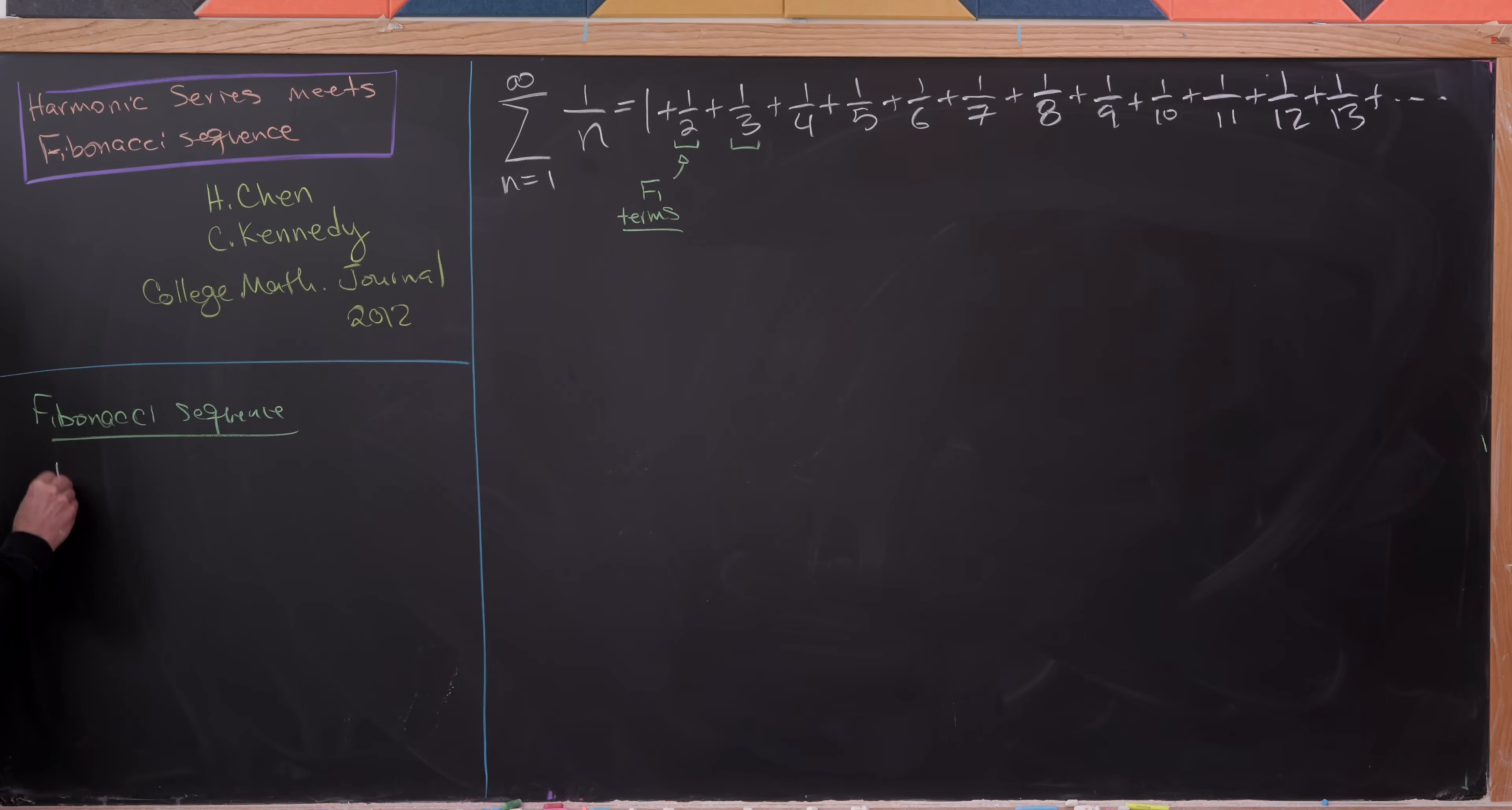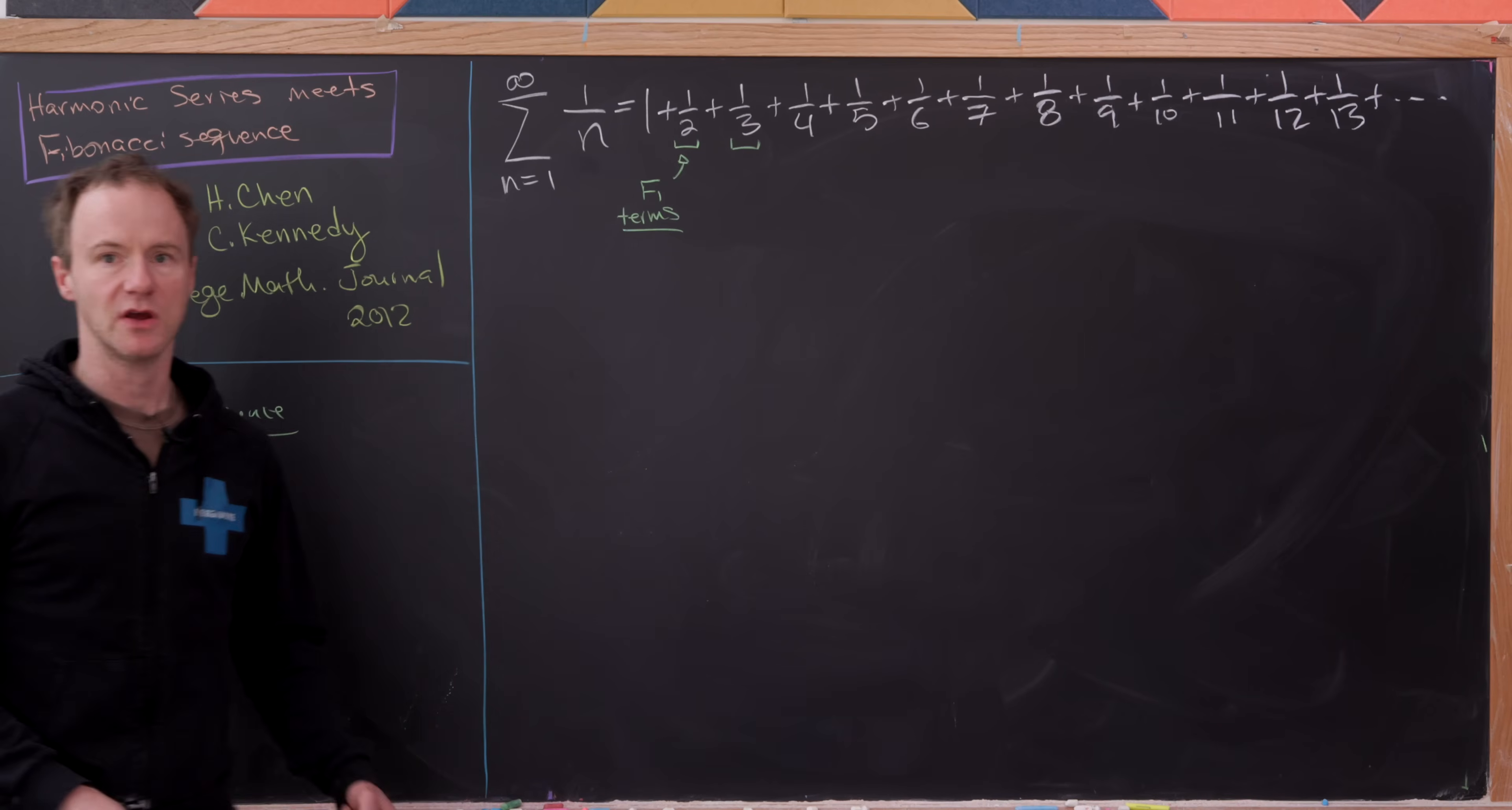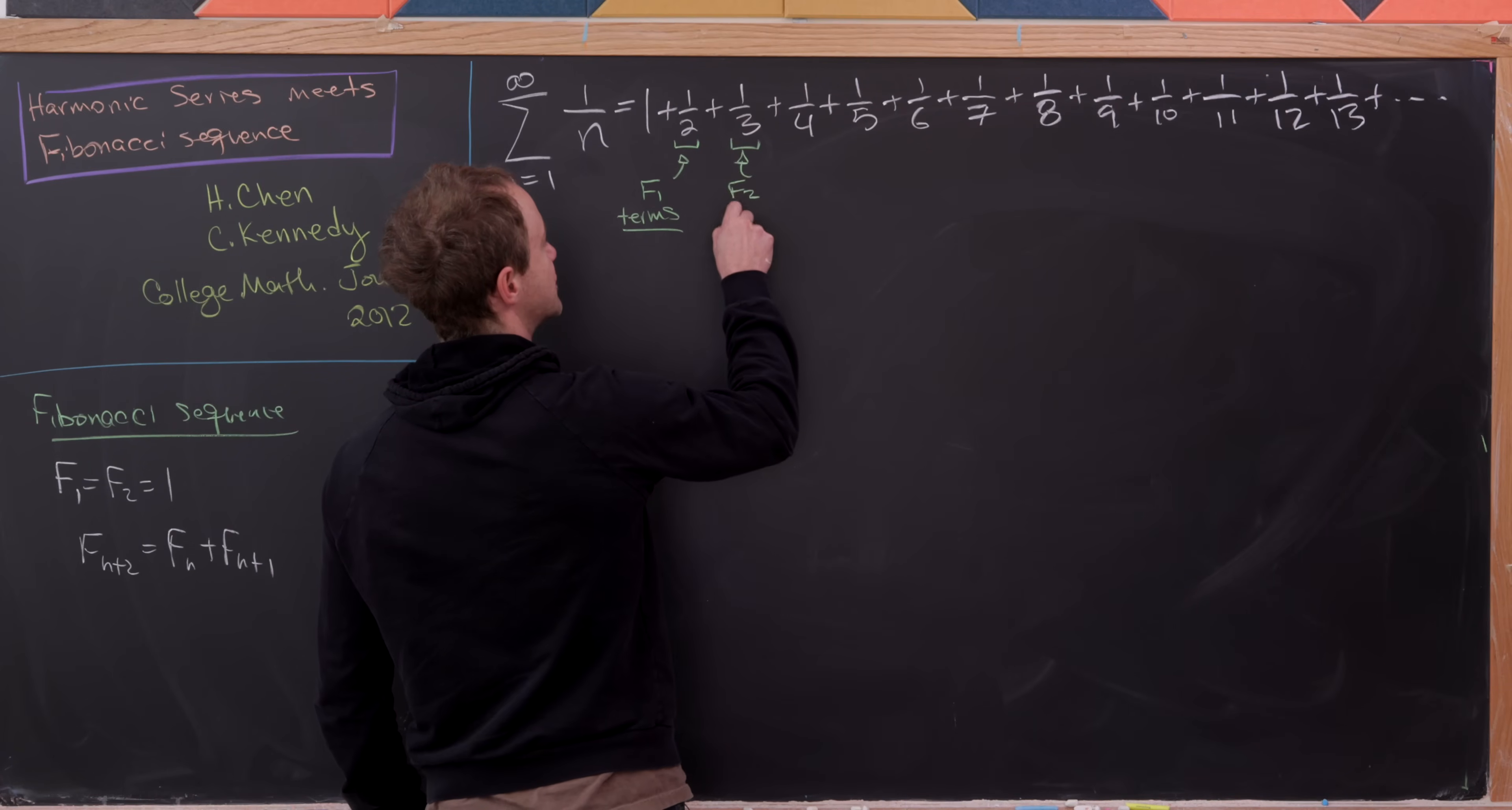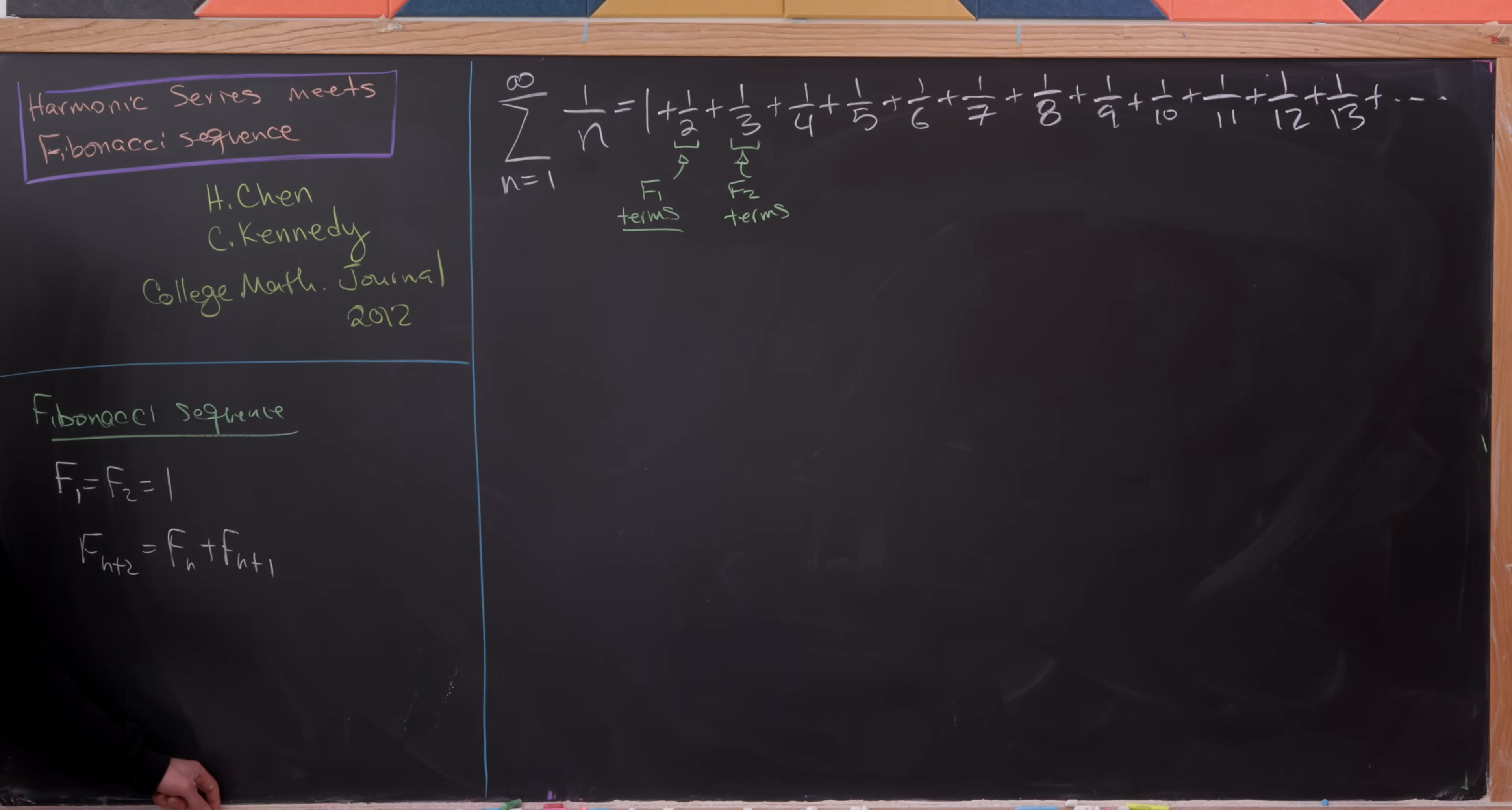And of course, that's defined by these two seeds: F sub 1 and F sub 2 is equal to 1. And then after that, we have F_n plus 2 equal to F_n plus F_n plus 1. So if we've got a single term, that's going to be F sub 1 terms. And here, this is going to be F sub 2 total terms. That's because F1 and F2, like I said before, are both equal to 1.